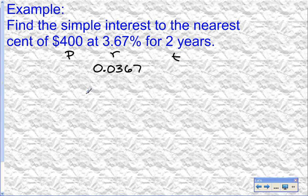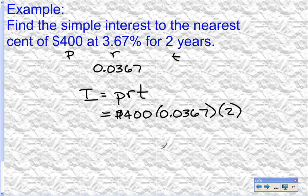So my interest is equal to the principal times the rate times the time. Plug those in. My principal is $400. My rate is 0.0367. And my time is two years. So I multiply these together. 400 times 0.0367 times two. And I get $29.36. That's how much interest I earned.